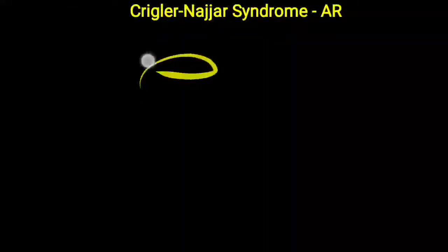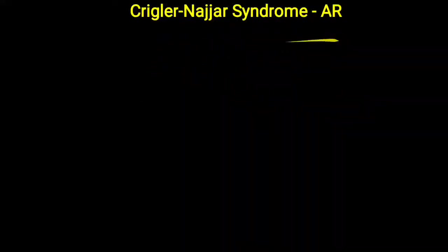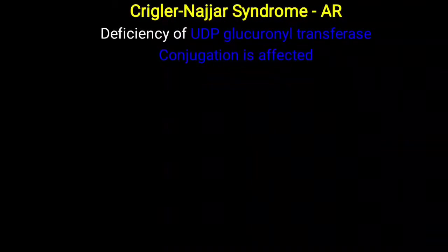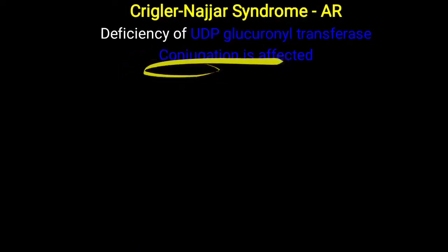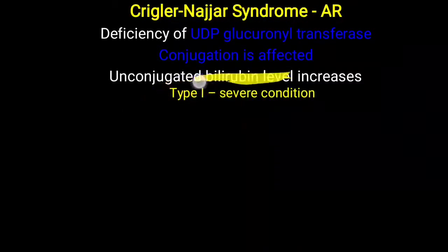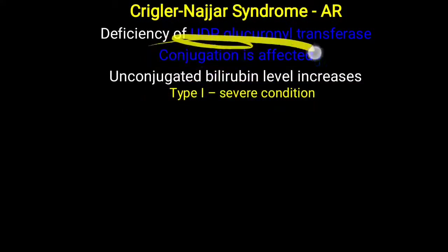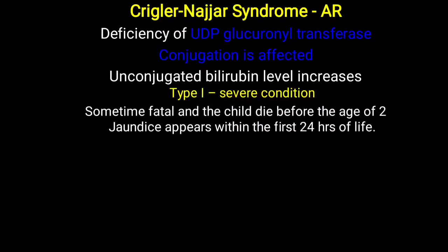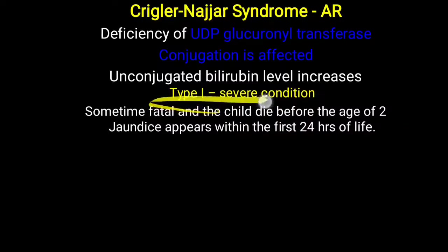The first is Crigler-Najjar syndrome, an autosomal recessive disorder. There is a deficiency of UDP-glucuronosyltransferase enzyme, which is responsible for conjugation of bilirubin. So conjugation is defective, leading to increased unconjugated bilirubin. Crigler-Najjar is divided into Type 1 and Type 2. Type 1 is the severe variety — sometimes fatal — and jaundice appears within the first 24 hours of life.